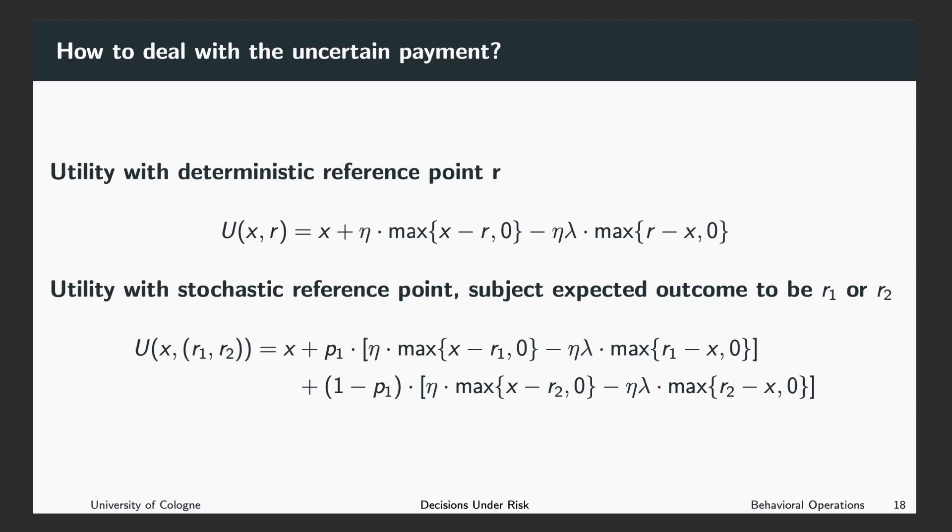With the probability 1 minus p₁ you expected the outcome to be r₂, so in this case we have the same idea: you compare the actual outcome with r₂ just with the probability 1 minus p₁.